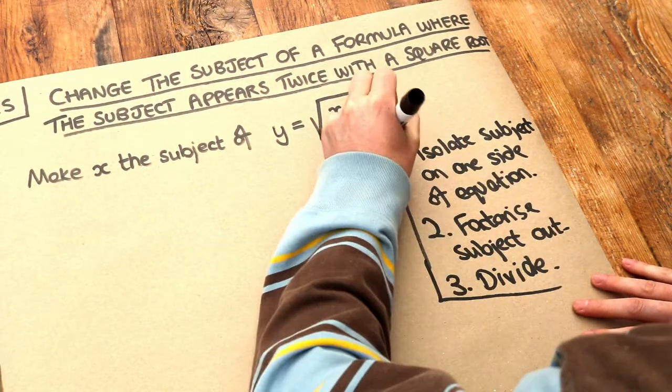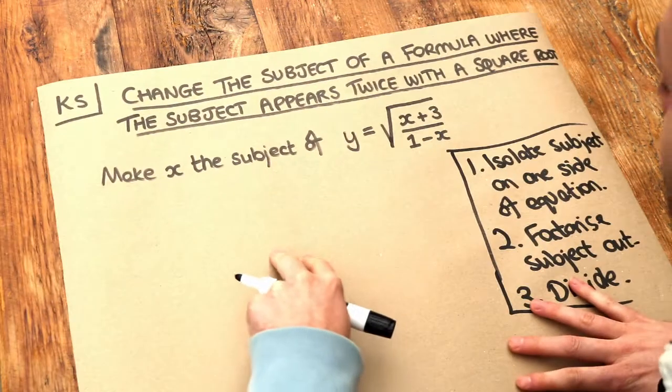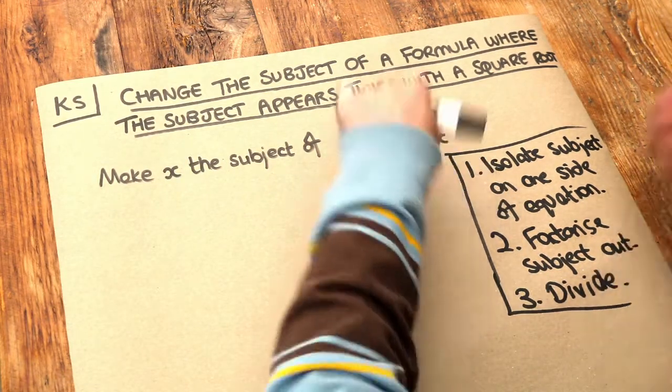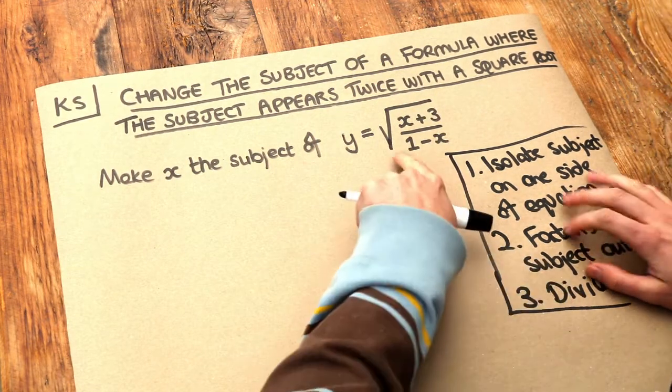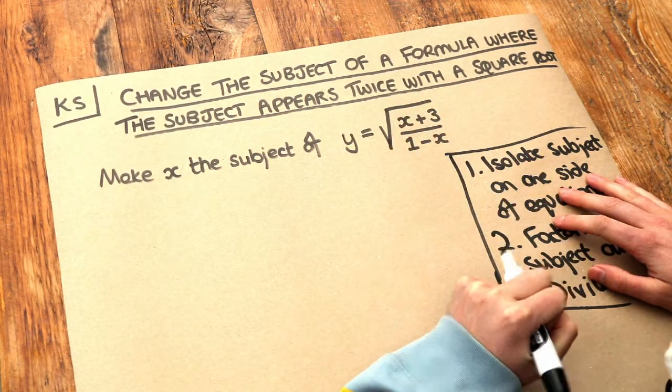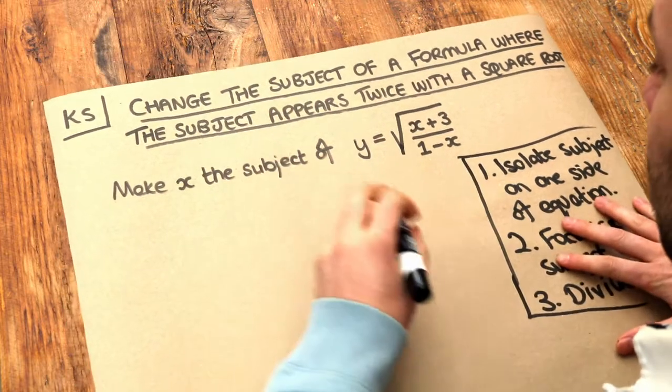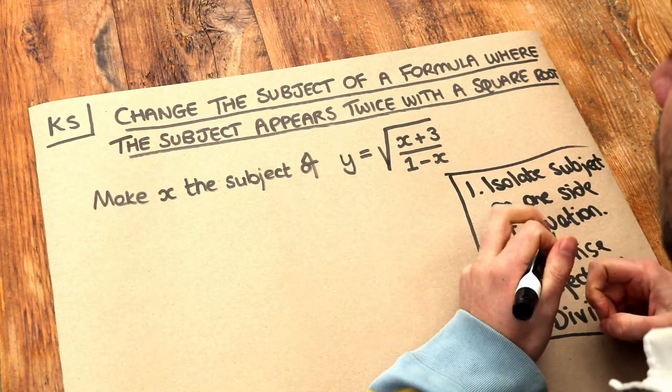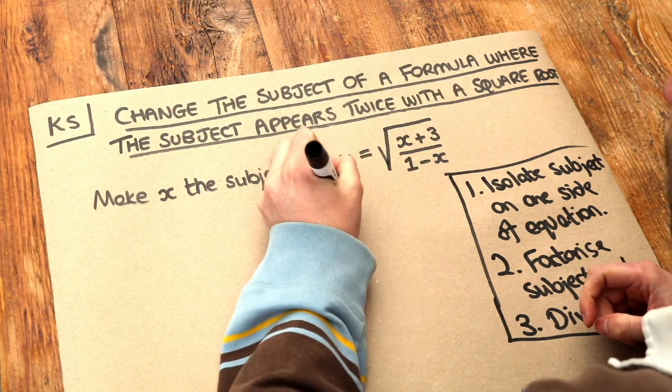So let's apply these steps to this problem here. Well firstly we want to try and get everything out in the open. Now x is trapped inside a fraction and it's trapped inside a square root. The last thing that happened on the right hand side was this square root. So that's the first thing we should undo first. How do we get rid of the square root? What's the opposite of square rooting? Well it's squaring. So let's square both sides.